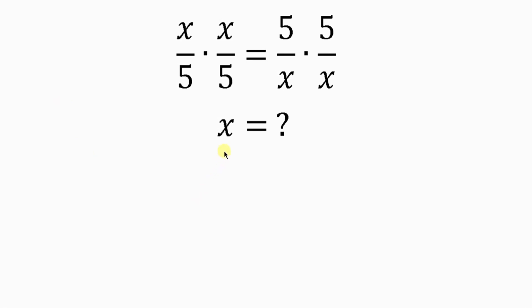Let's find the values of x, given that x over 5 times x over 5 is equal to 5 over x times 5 over x.